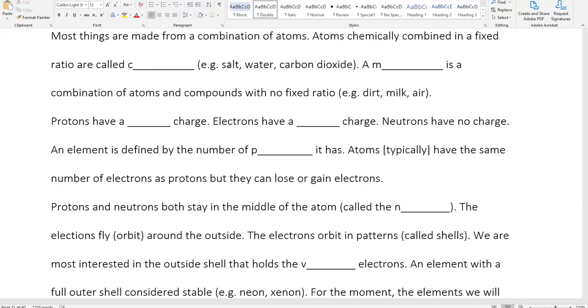Protons have a positive charge. Electrons have a negative charge. Neutrons have no charge.